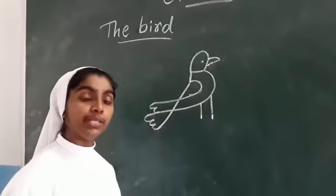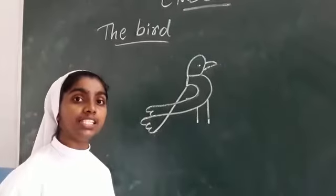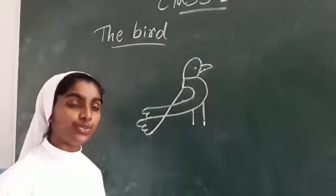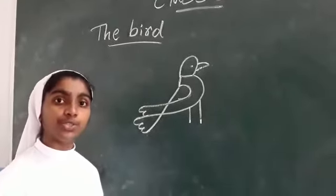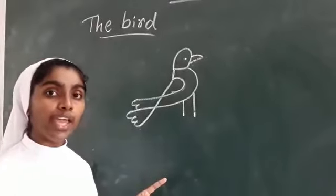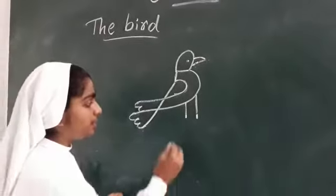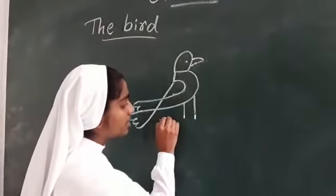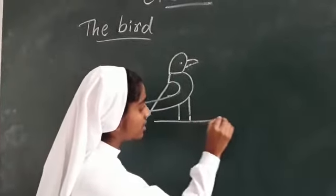Now we know usually birds are sitting on a tree, on the branch of a tree. So let's draw a branch. See, like this.